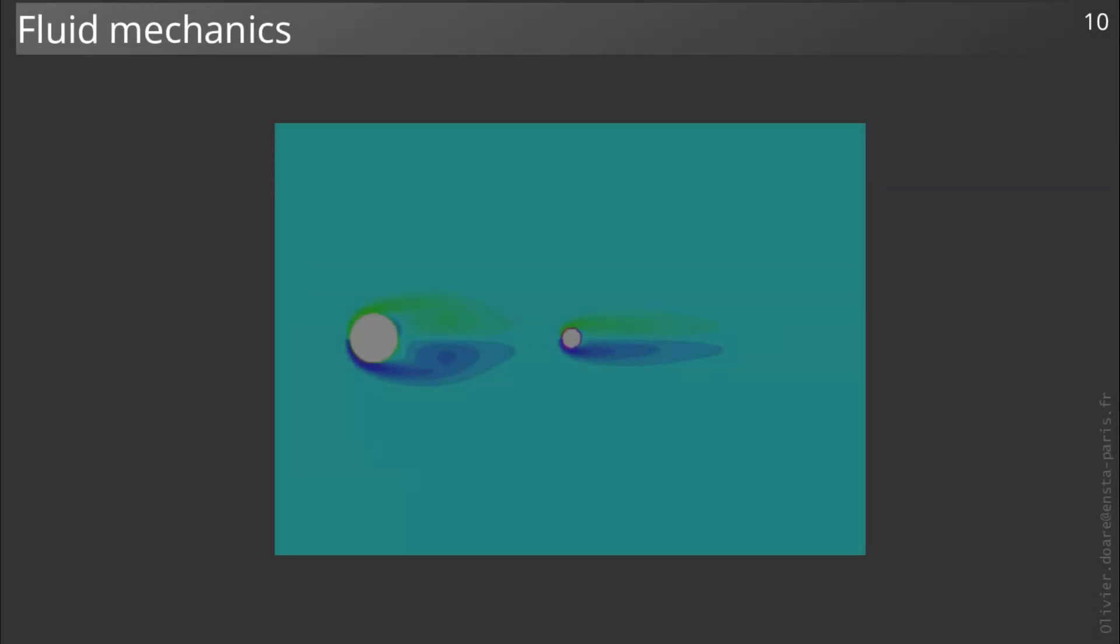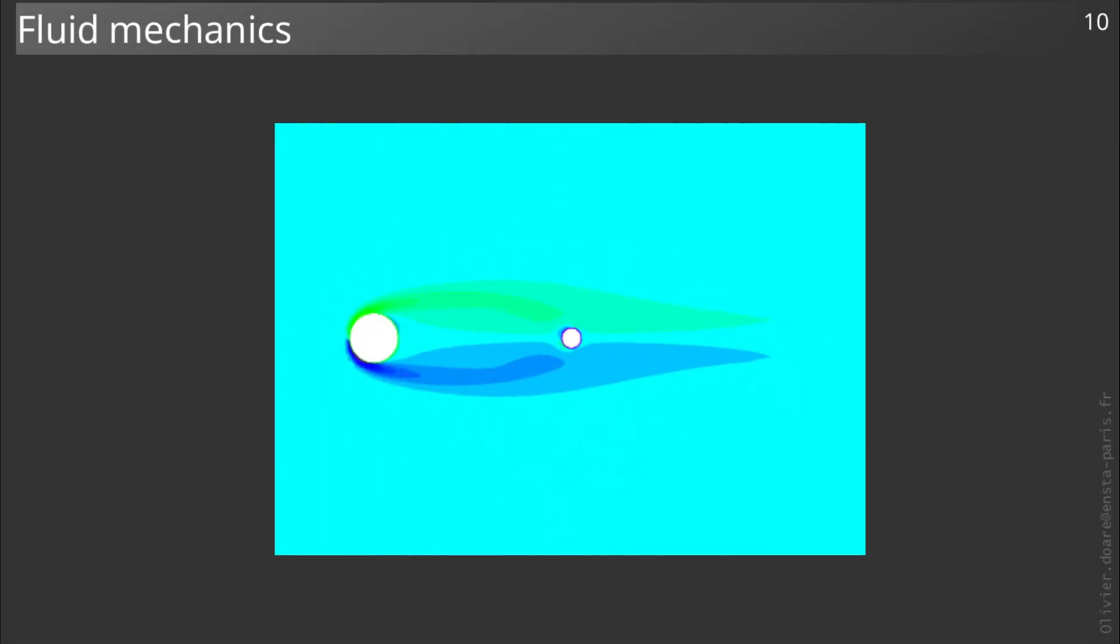Let's now take the point of view of the fluid mechanics. When we carry out a fluid mechanics study, we are interested, for example, in the influence of an object on the dynamics of this flow. Here is a numerical simulation of the flow around two cylinders. The color levels quantify the amplitude of the vorticity.